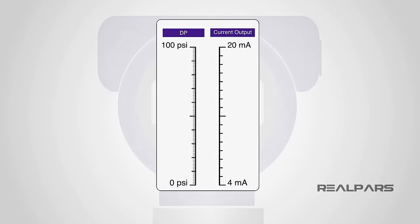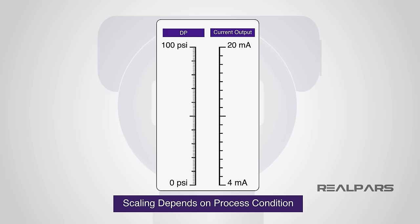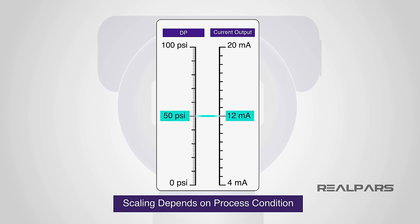The electrical output generated by the DP transmitter electronic module is linear and proportional to the actual measured delta P. Depending on the range of measured pressure, a 4 milliamp signal would equal a measured delta P of 0 PSI, and a 20 milliamp signal would equal the maximum measurable value — in this case, the maximum delta P is 100 PSI. Using these variables, we would know that a 12 milliamp signal would equal 50 PSI delta P. The relationship of the produced electrical signal to the units of measure is called the scaled output.